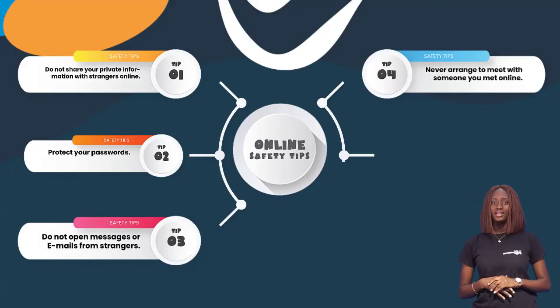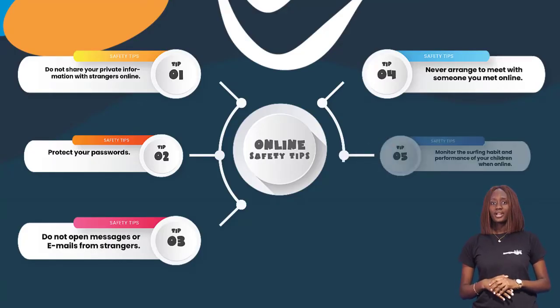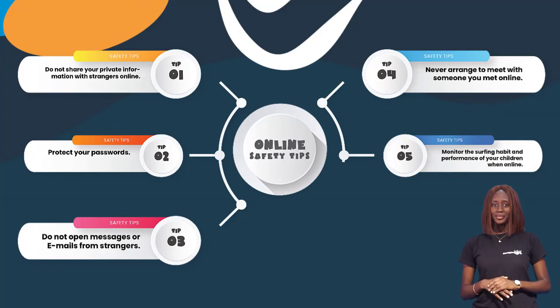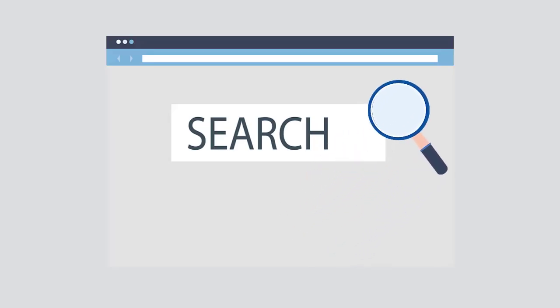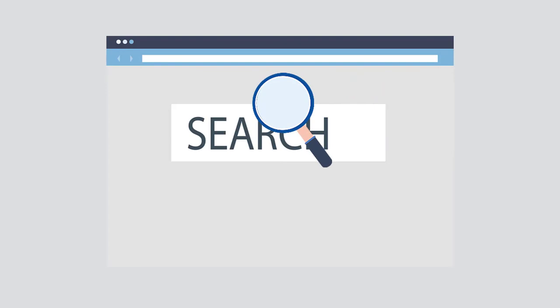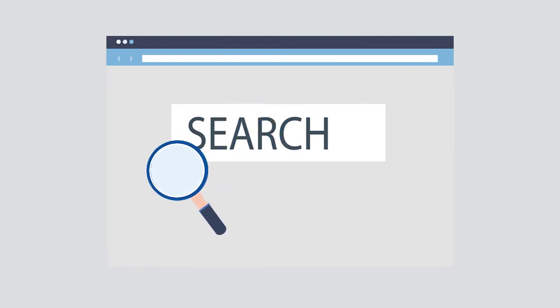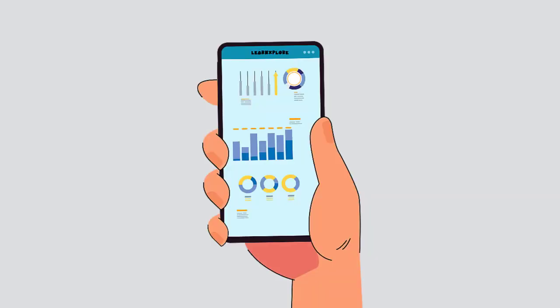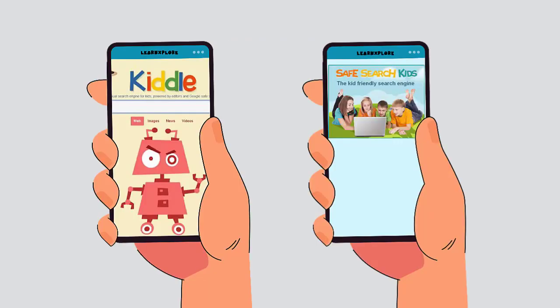Our fifth tip, this is for parents: monitor the surfing habits and performance of your children. As a parent or guardian, you can monitor your child's internet time and also check their analysis dashboard from time to time to ensure they are taking their courses and not spending time on other things like games. If they need to surf the internet, they can use kids search engines such as Kido or Safe Search Kit, which is at Google or for children.